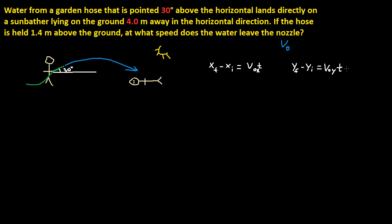...plus one-half A T squared. Now, what do we know about our positions? If we say this point right here is zero on both the Y axis and the X axis, then from here to the sunbather is 4.0 meters.